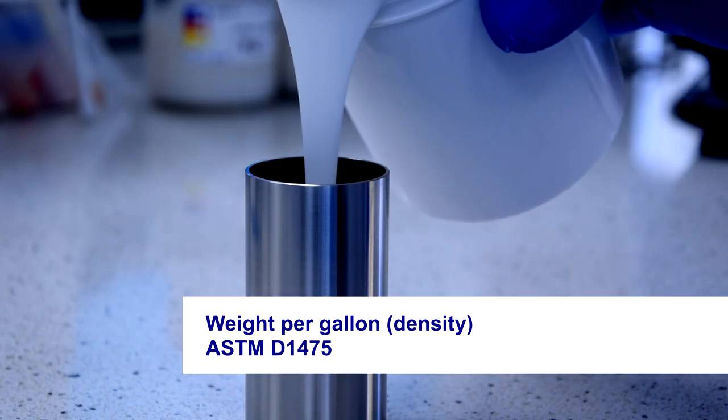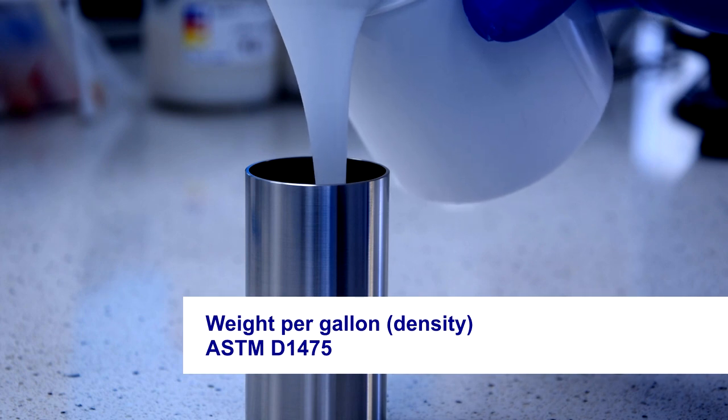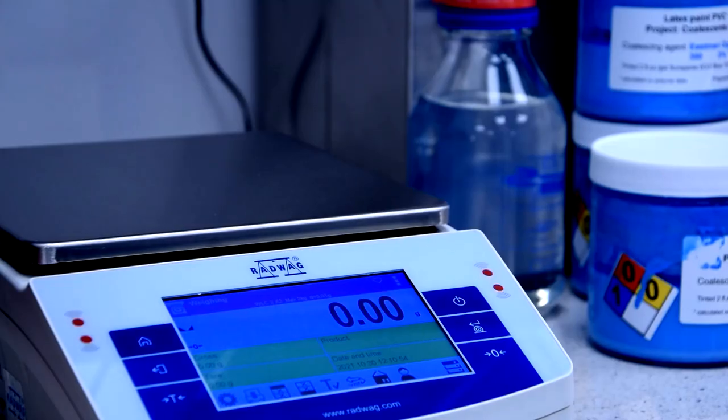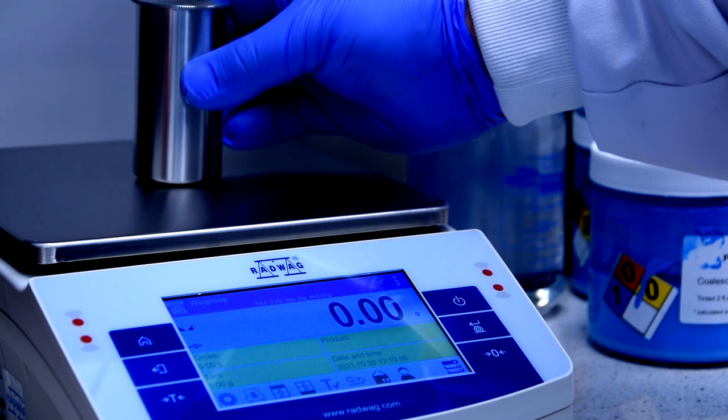To check if the density is correct, determine the weight per gallon using a cup called a pycnometer.